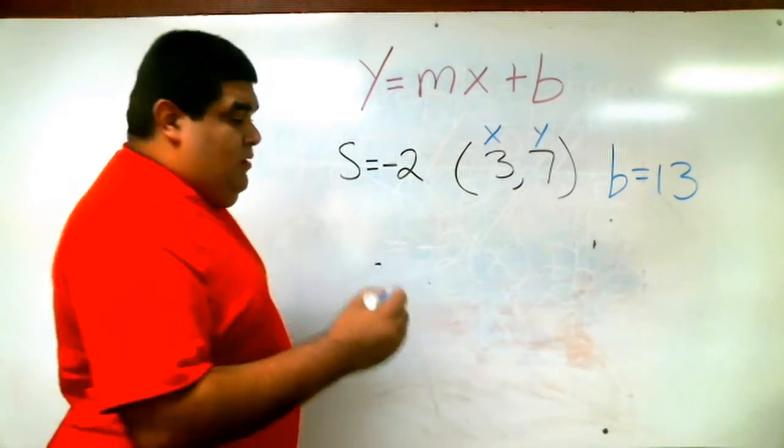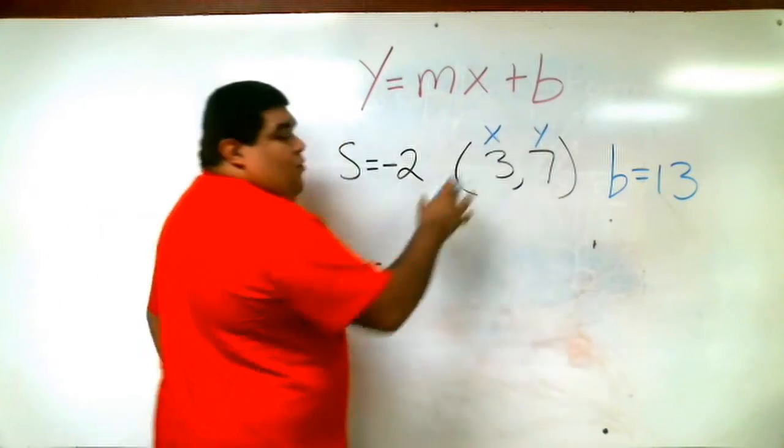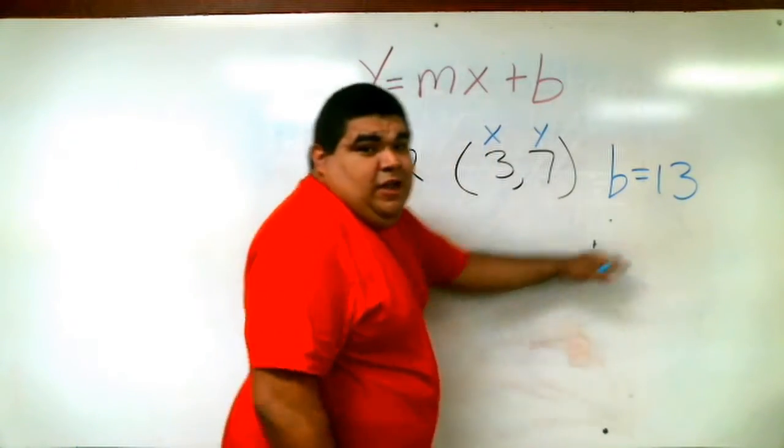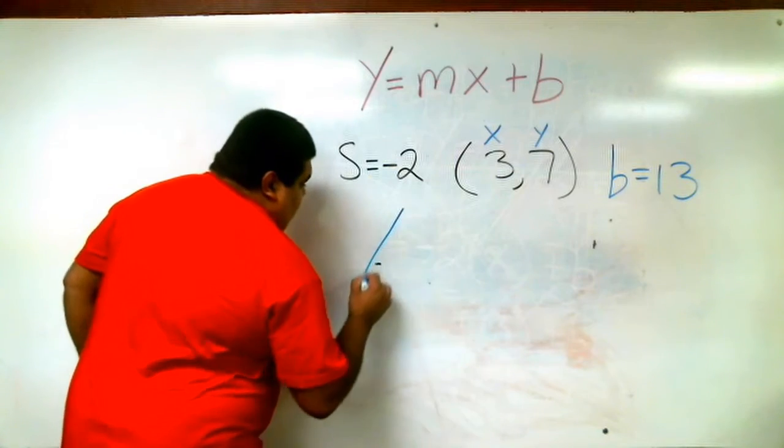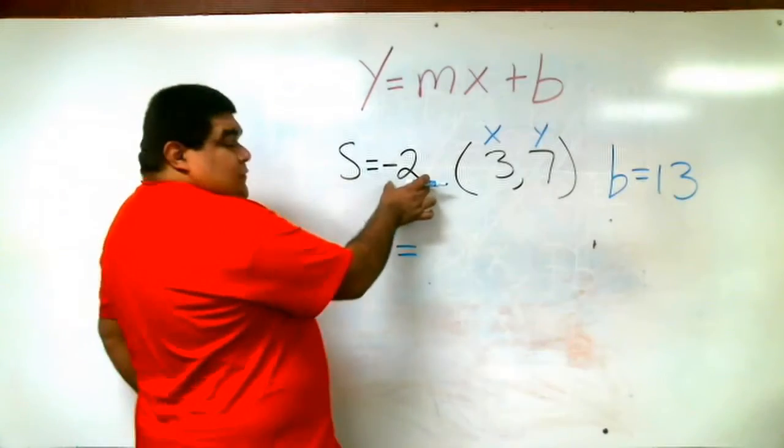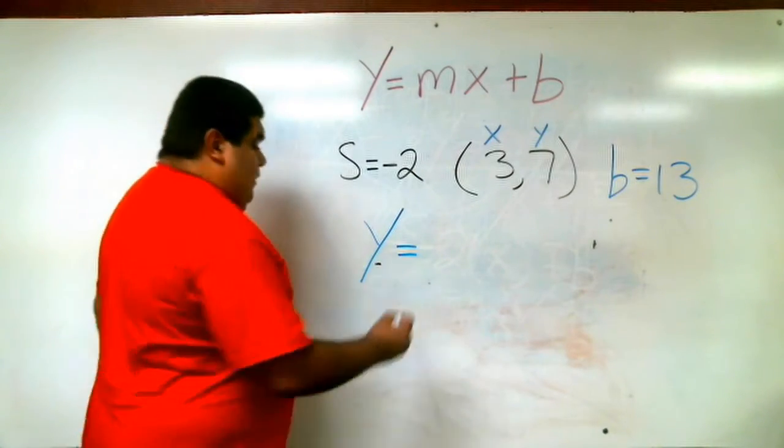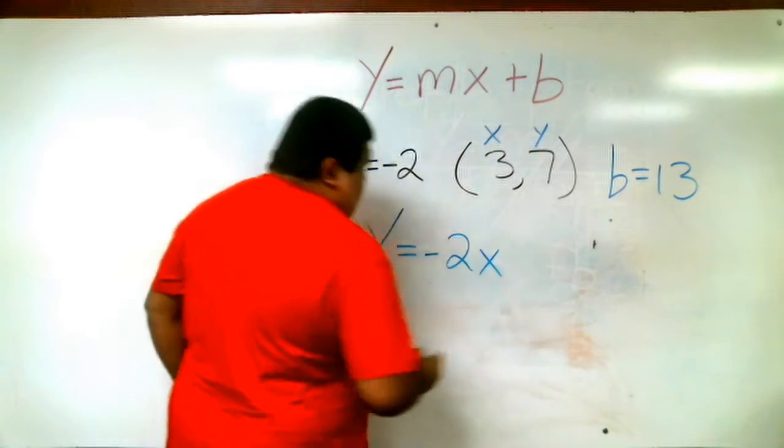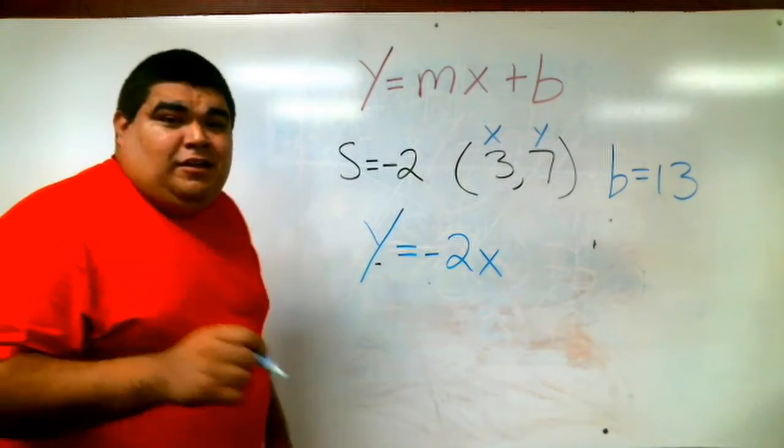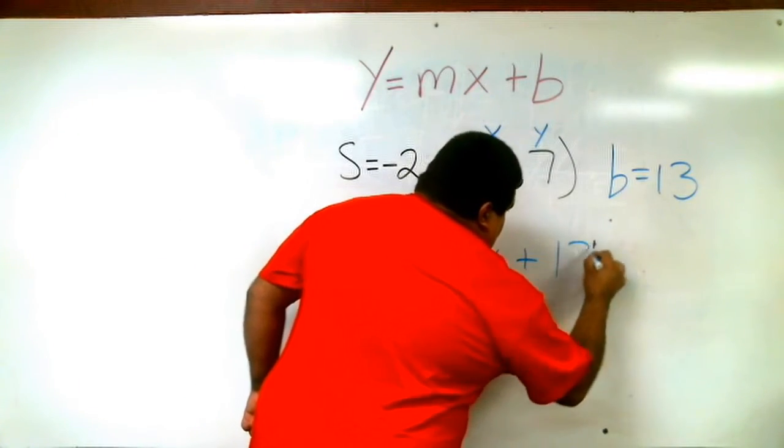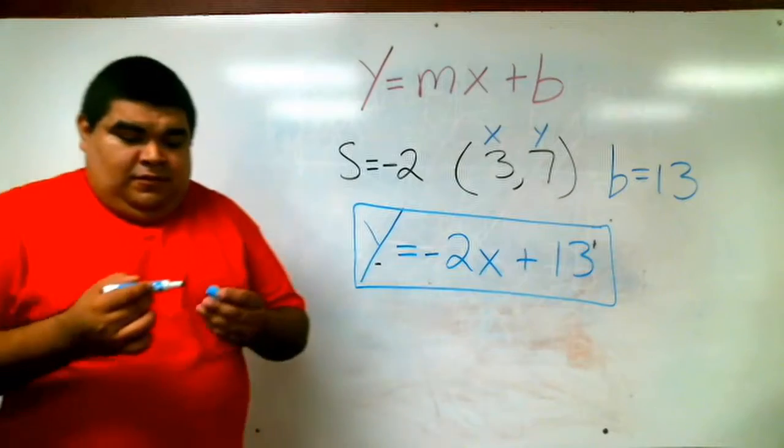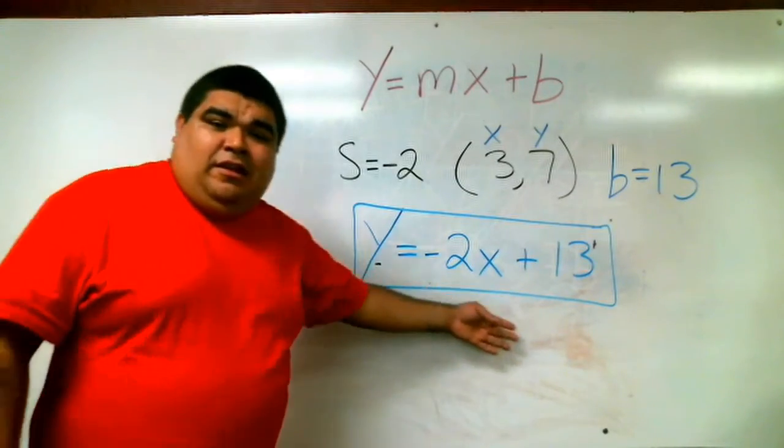We have y, because y we're going to keep it for now. We're not going to use the coordinate no more. All we're going to use now is just the s and the b. We have y equals negative 2, because remember, that was our slope, negative 2. So negative 2x. Remember, is the 13 positive or negative? Positive, right? So plus 13. And that is our answer. So we created an equation.